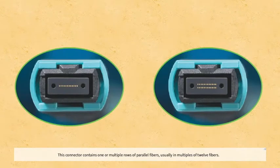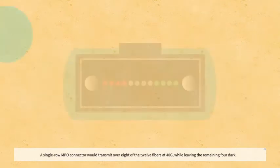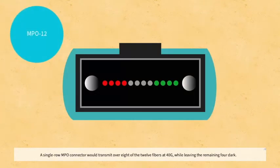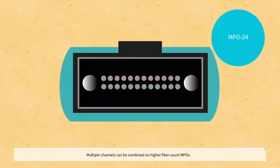This connector contains one or more multiple rows of parallel fibers, usually in multiples of 12 fibers. A single-row MPO connector would transmit over eight of the 12 fibers at 40G while leaving the remaining four dark. Multiple channels can be combined on higher fiber count MPOs.